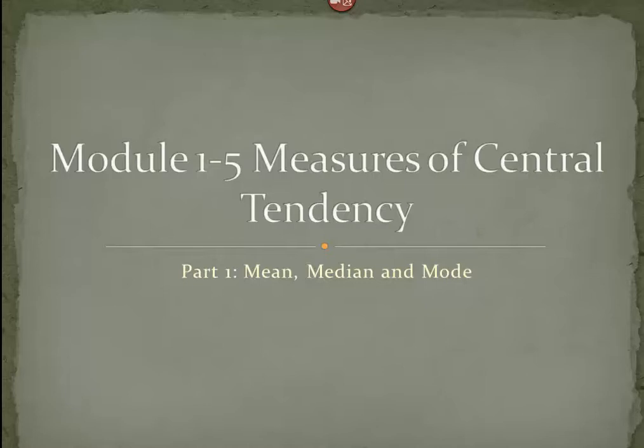Welcome again. This module is still Module 1, Part 5. We're going to begin to look at important numbers that help us describe large sets of data. We're actually going to look at three different types of numbers, all of which give us a picture of where our data is centered around.